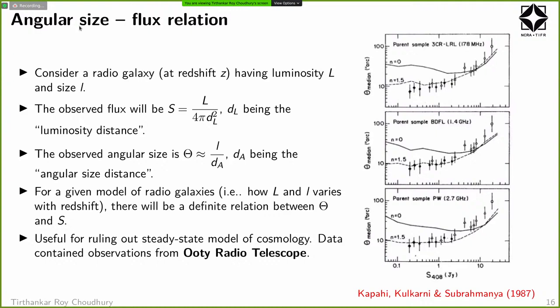Let's start with the angular size and flux relation of radio galaxies — very important, and it has a connection to the radio astronomy group at NCRA where I work. Imagine a radio galaxy at redshift Z with luminosity L and size l. We don't observe the intrinsic luminosity or size — what we observe is the flux S, which is the luminosity divided by 4π D_L squared, where D_L is the luminosity distance. In cosmology you have to be careful about defining distances because of expansion, curvature, and general relativistic effects.